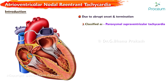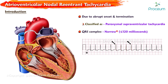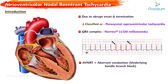As with the majority of supraventricular tachycardias, the QRS complex in AVNRT is usually narrow, less than or equal to 120 ms, reflecting normal ventricular activation through the His-Purkinje system, although aberrant conduction or underlying bundle branch block can result in a wide QRS complex.